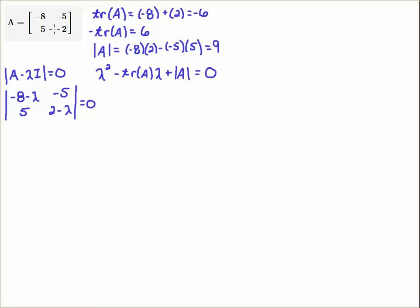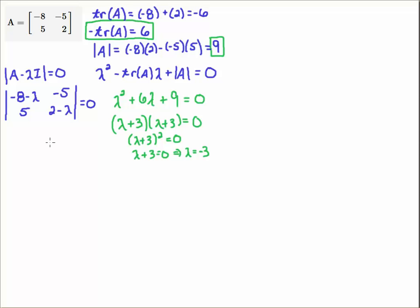So in order to find the eigenvalues, we take A minus lambda I, we take the determinant of that and set it equal to 0. You get this system. You can actually compute this determinant and you'll see that you'll get the same result as if you used this formula. So this will be the result you'll get. You'll get lambda squared plus 6 lambda plus 9 equals 0.